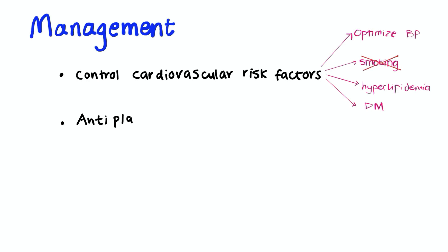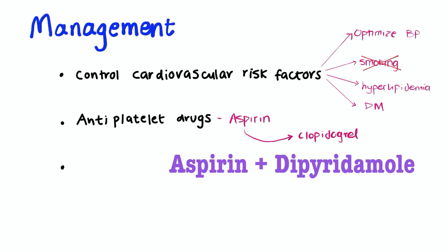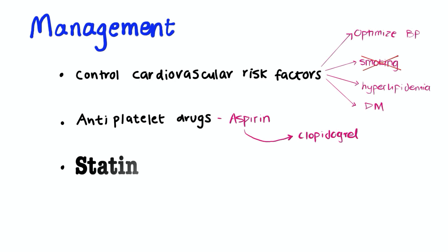That begins with antiplatelet therapy. Aspirin is used in all cases unless there's a contraindication. Aspirin for two weeks and then change to clopidogrel after that. If clopidogrel is contraindicated then you can go for aspirin with slow release dipyridamole. A statin like simvastatin should also be started immediately and continued long term.